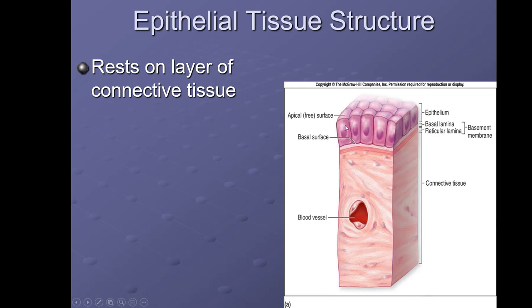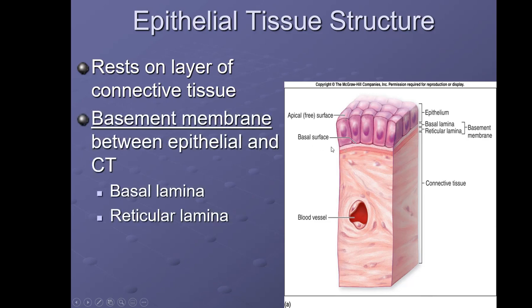Looking at this picture, we're seeing epithelial tissue with only one layer of closely packed cells. One surface is exposed and the other is attached. The attached surface is called the basal surface, and the top that is exposed is called the free surface, also known as the apical surface.